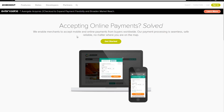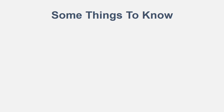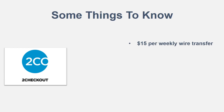Besides the features that 2Checkout offers, I did want to go more in depth on some details you need to know. There is a $15 per weekly wire transfer fee. With Shopify Payments, they don't actually charge for a wire transfer — it just automatically goes to your bank. With 2Checkout, they do charge a $15 fee for those weekly wire transfers, but you just have to look at it as part of the business costs for starting your stores.